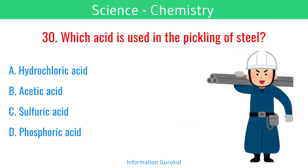Which acid is used in the pickling of steel? Hydrochloric acid.